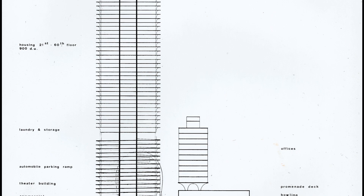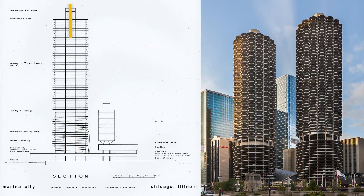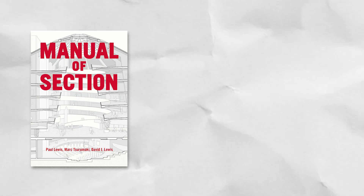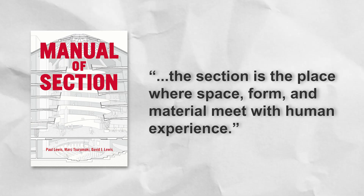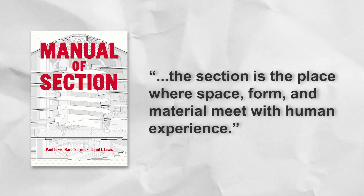What is a section? Sections help architects take the architectural concept that was established within the plan drawing and materialize it. A section is the type of architectural drawing that investigates the relationship between spaces through a vertical cut taken through a building or space. One of the main goals of a section is to help study the movement of users between different spaces. In Manual of Section, it is stated that "the section is a place where space, form, and material meet with human experience." The section cut exposes both interior and exterior profiles of a building and provides a view into a building that is typically not seen in the real world.